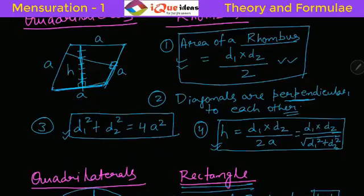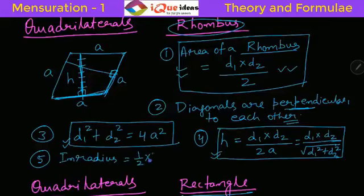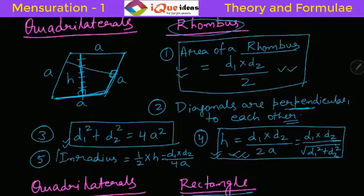A Rhombus has an incircle. So I will put it like this: the fifth property, especially for Rhombus, inradius is given by half of height. So height formula we have created here. It is H by 2, that is, you can also say it is D1 into D2 divided by 4 times A. Inradius of a Rhombus is this one. If you draw a circle inside the Rhombus touching all four sides, this will be the radius.